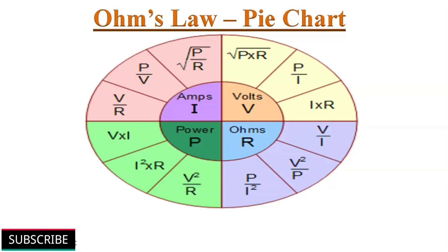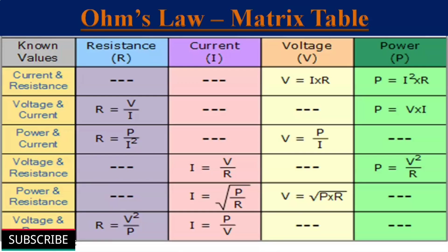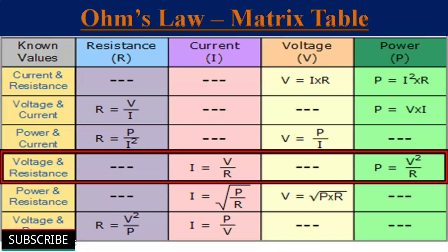To understand the relationship between voltage, current, resistance and power, we can use the Ohm's law pie chart. If you know the values of current and voltage, you can find power and resistance using the corresponding formulas. Similarly, Ohm's law equations can be condensed into a simple matrix table for easy reference. If we know voltage and resistance, we can find current and power using those two formulas.